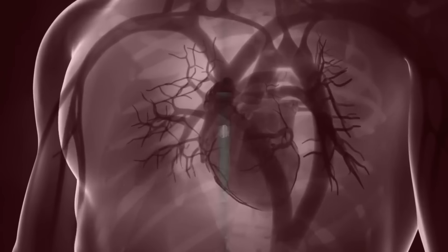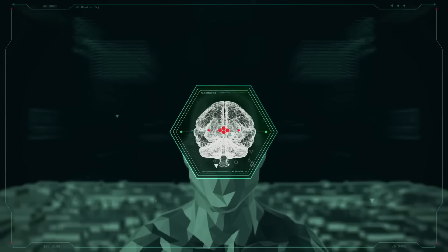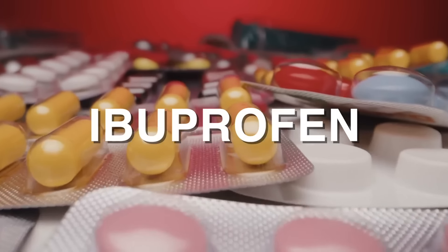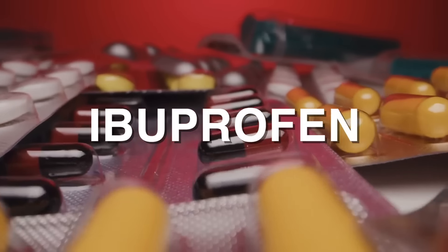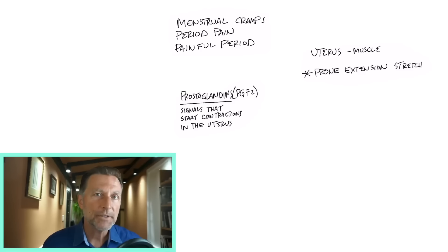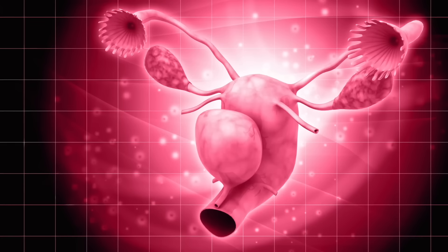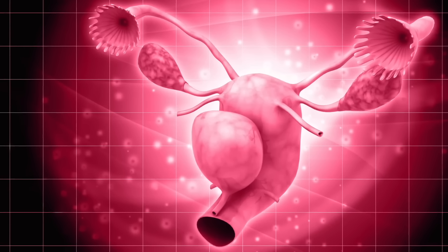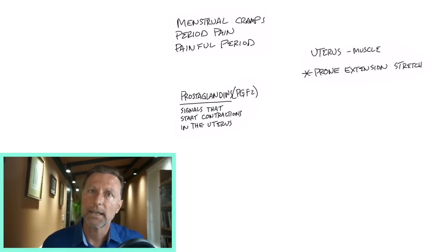This is why prostaglandins are behind inflammation in the brain. When people take medication like ibuprofen for pain or a headache, it is blocking these prostaglandins. But there's different types of prostaglandins. The one that we're going to talk about has a very specific purpose of causing vasoconstriction in the uterus if it's too high. I will get into why it's too high in a minute.